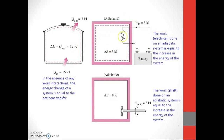For electrical energy: the electrical work done on an adiabatic system is equal to the increase in the energy of the system. The electrical work input supplied is 5 kilojoules, so delta E is also equal to 5 kilojoules.